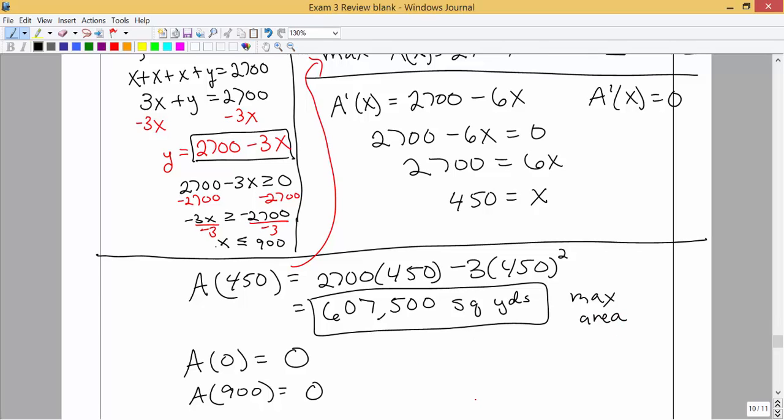So the maximum area would be that value that we found there, and it occurs when x is equal to 450 yards. So let's go back to the picture and let's figure out what y has to be then.